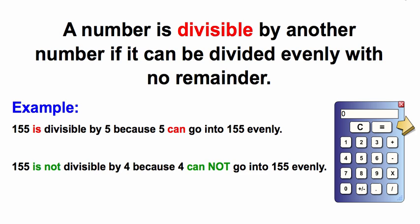A number is divisible by another number if it can be divided evenly with no remainder. For example, 155 is divisible by 5 because 5 can go into 155 evenly — there's not going to be a remainder. So we can say that 155 is divisible by 5.